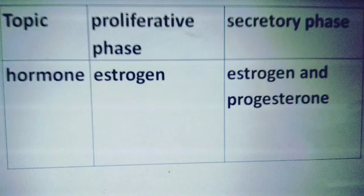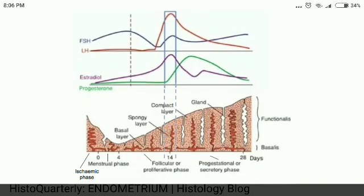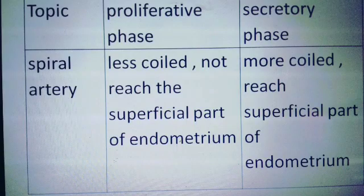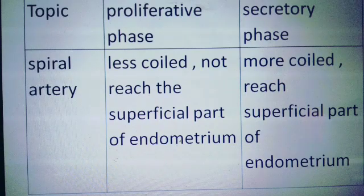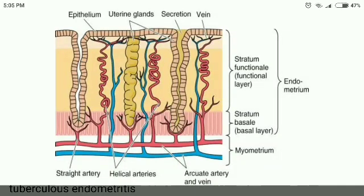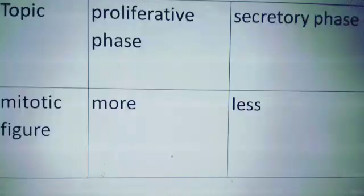This picture shows the influence of different hormones in increasing the thickness of the endometrium. In the proliferative phase, the spiral artery is less coiled and does not reach the superficial part of the endometrium, but in the secretory phase it becomes more coiled and reaches the surface. This picture shows the spiral artery and straight artery.